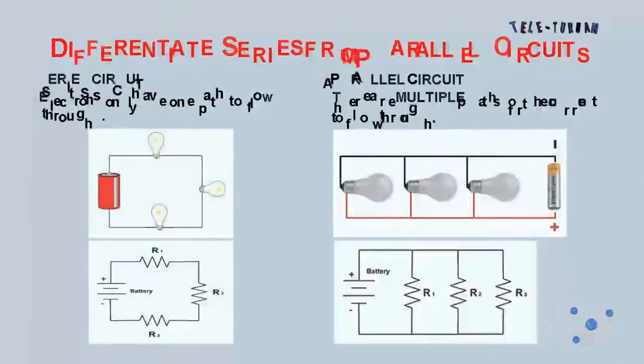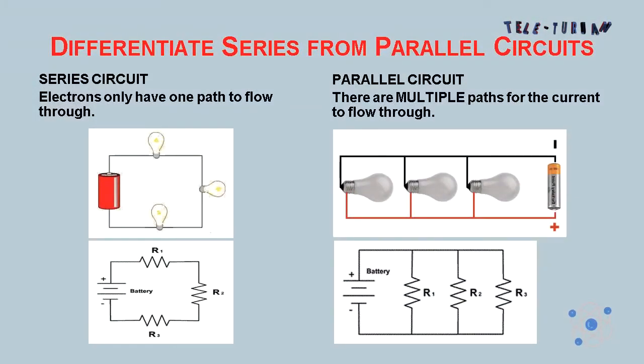Once again, let us differentiate series from parallel circuits. Series circuits: electrons only have one path to flow through. Parallel circuit: there are multiple paths for the current to flow through.